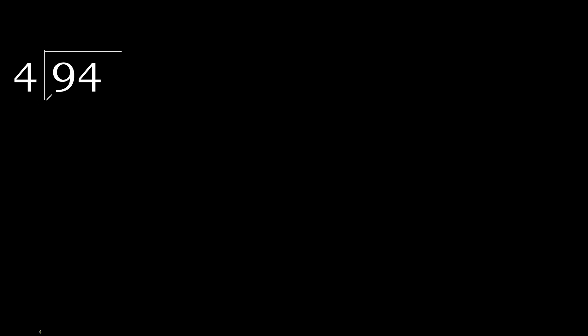94 divided by 4. 9 is not less, therefore with 9: multiply by which number is nearest to 9 but not greater? 4 multiplied by 3 is greater; multiply by 2 is 8, which is not greater. 9 minus 8 is 1.